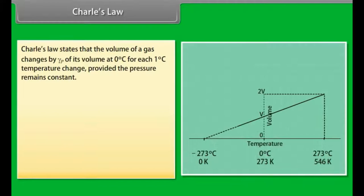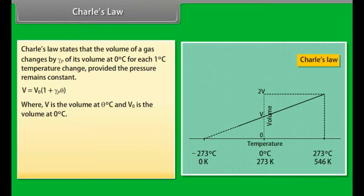Charles law states that the volume of a gas changes by γP of its volume at 0 degrees centigrade for each 1 degree centigrade temperature change, provided the pressure remains constant. V equals V₀ multiplied by 1 plus γP θ, where V is the volume at θ degrees Celsius and V₀ is the volume at 0 degrees centigrade. The above relation can be written as V equals V₀ multiplied by 1 plus θ over 273.